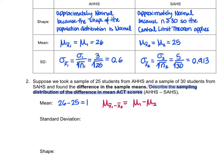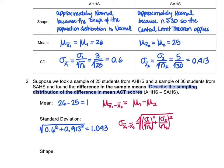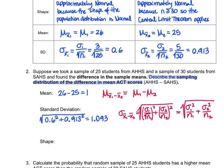To find the standard deviation of the sampling distribution of the difference in mean scores, we use the Pythagorean theorem of statistics with the two standard deviations we already found, giving us a value of 1.093. Formally, the standard deviation of the sampling distribution of the difference in mean ACT scores equals the square root of the sum of the variances of the two original sampling distributions — this is the formula on your formula sheet. The shape is normal because both sampling distributions are approximately normal, as we already checked the normality conditions for both.